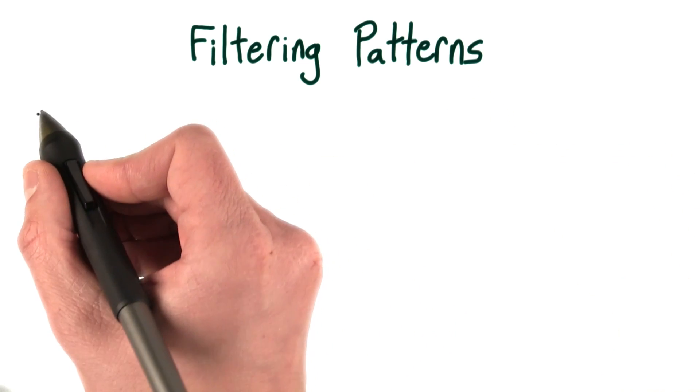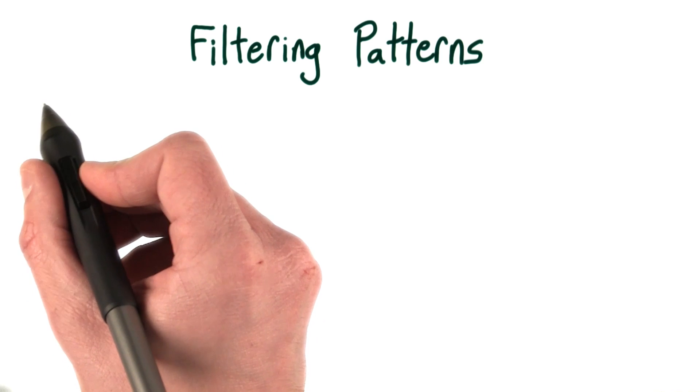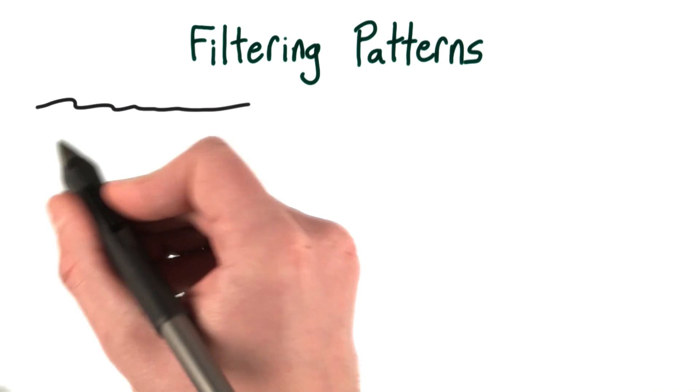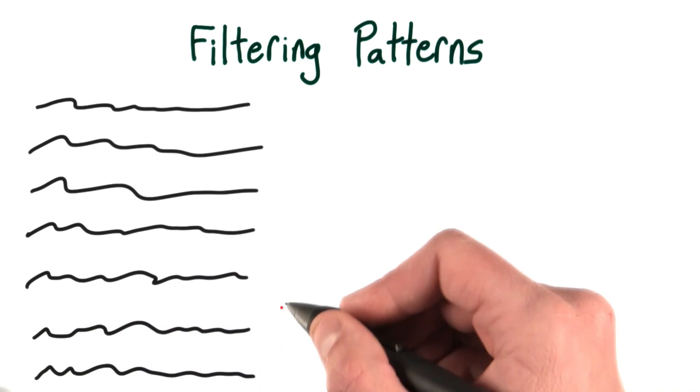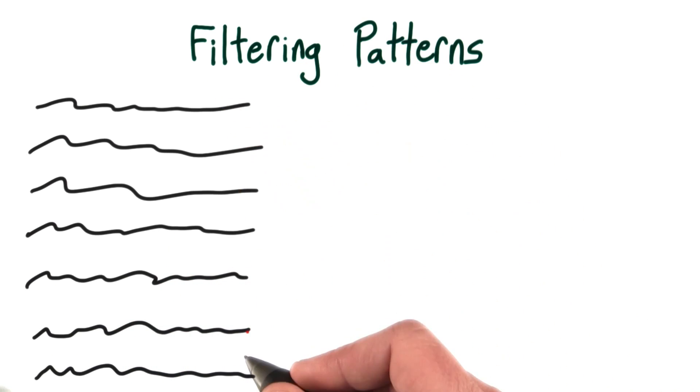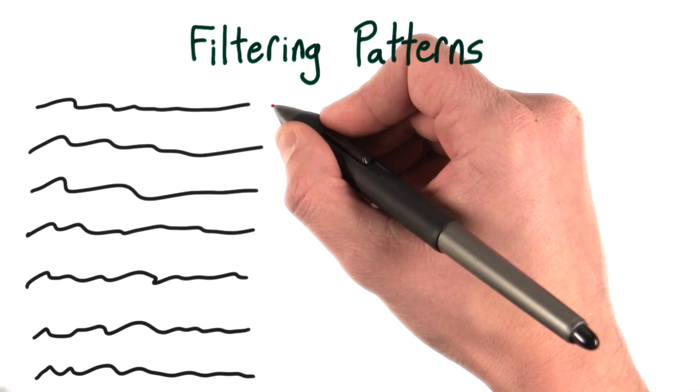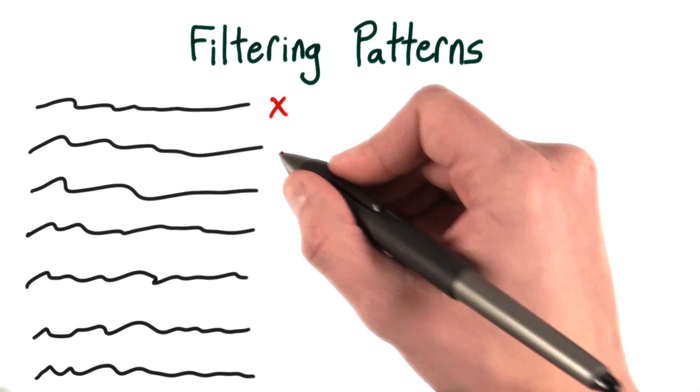By that I mean if we have some long list of data with lots of records—1, 2, 3, and so on—a filtering pattern will go through the entire dataset and just decide which data to keep and which to throw away.